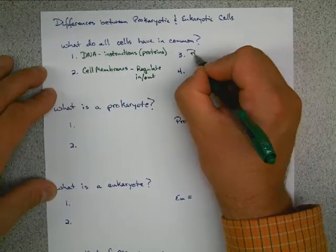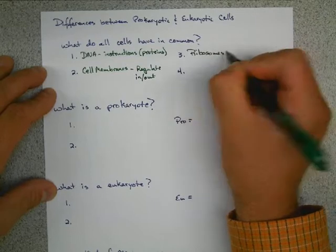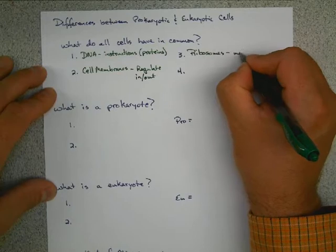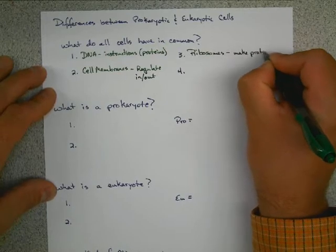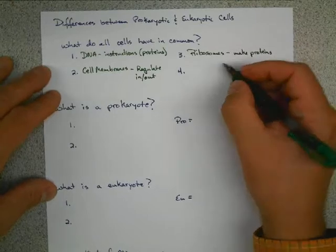The third thing is going to be ribosomes. Ribosomes are tiny structures. You remember those from chapter 12. And what they do is they make the proteins. Every cell has got to have proteins. They've got to have their enzymes to control their chemistry.